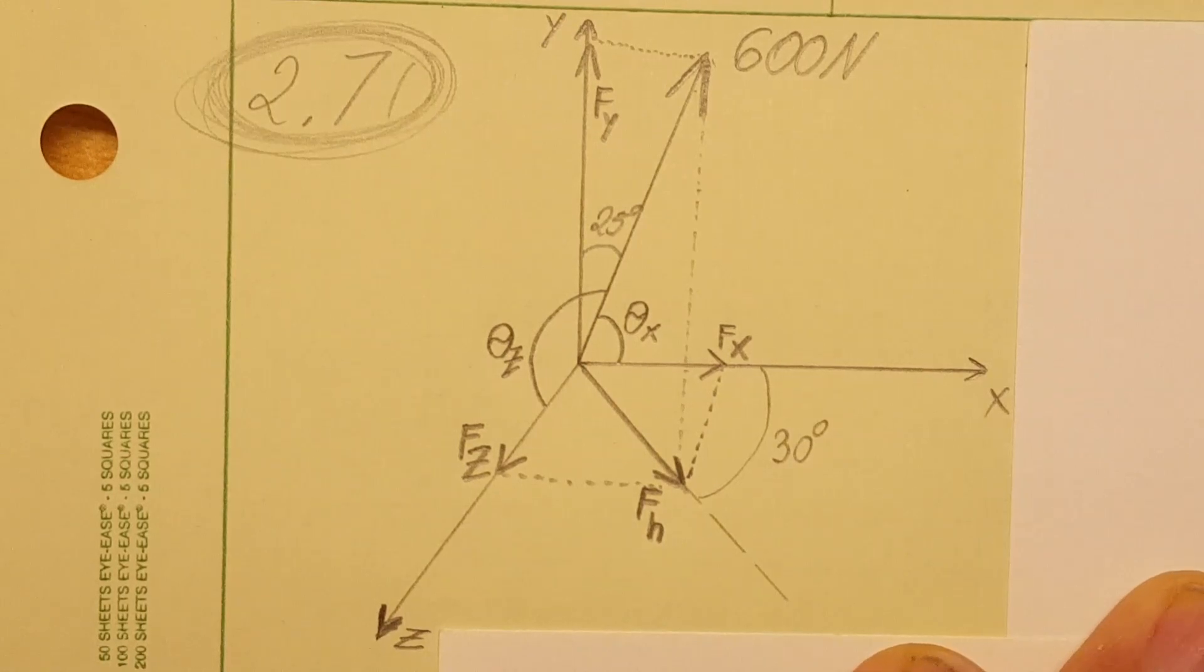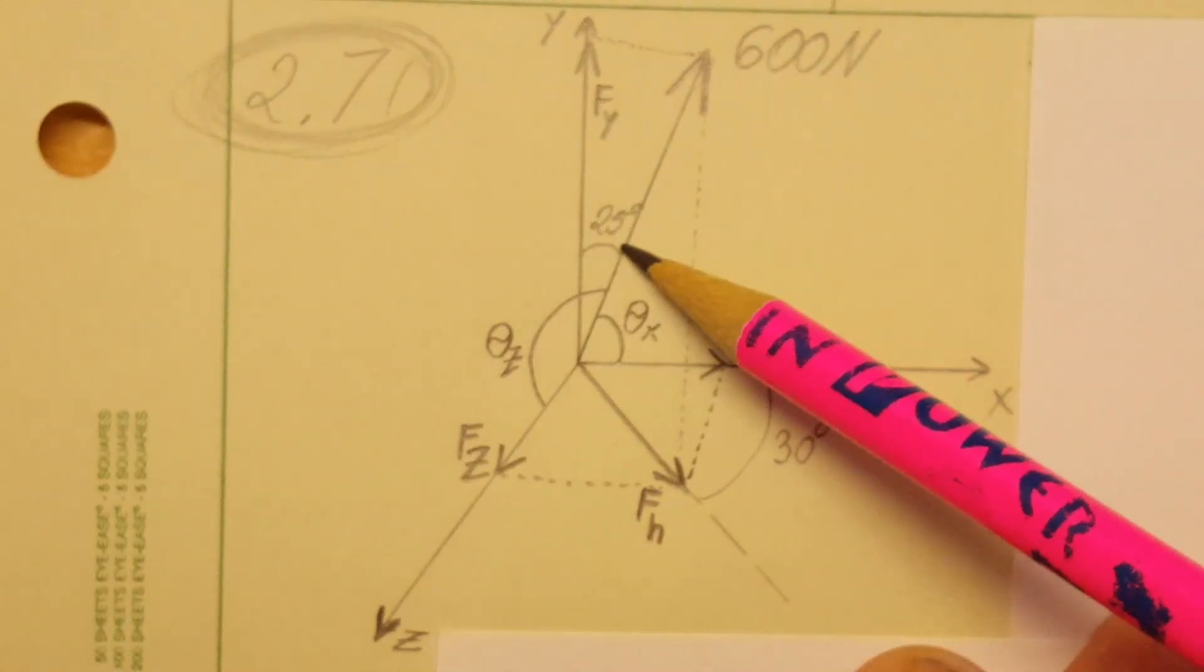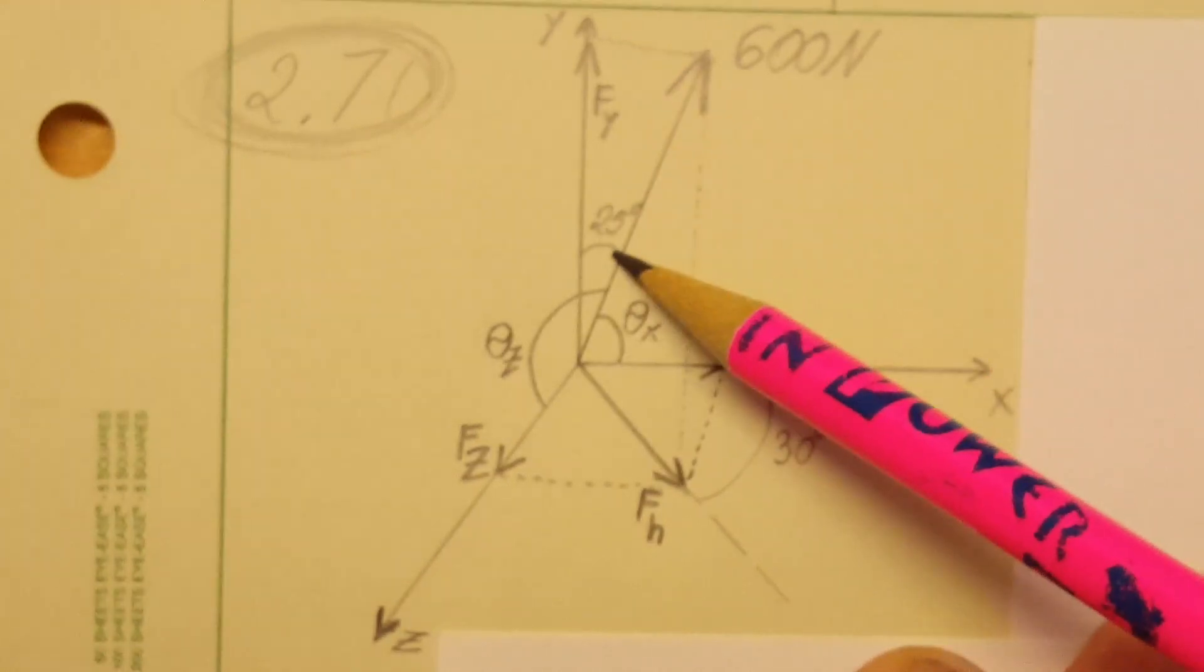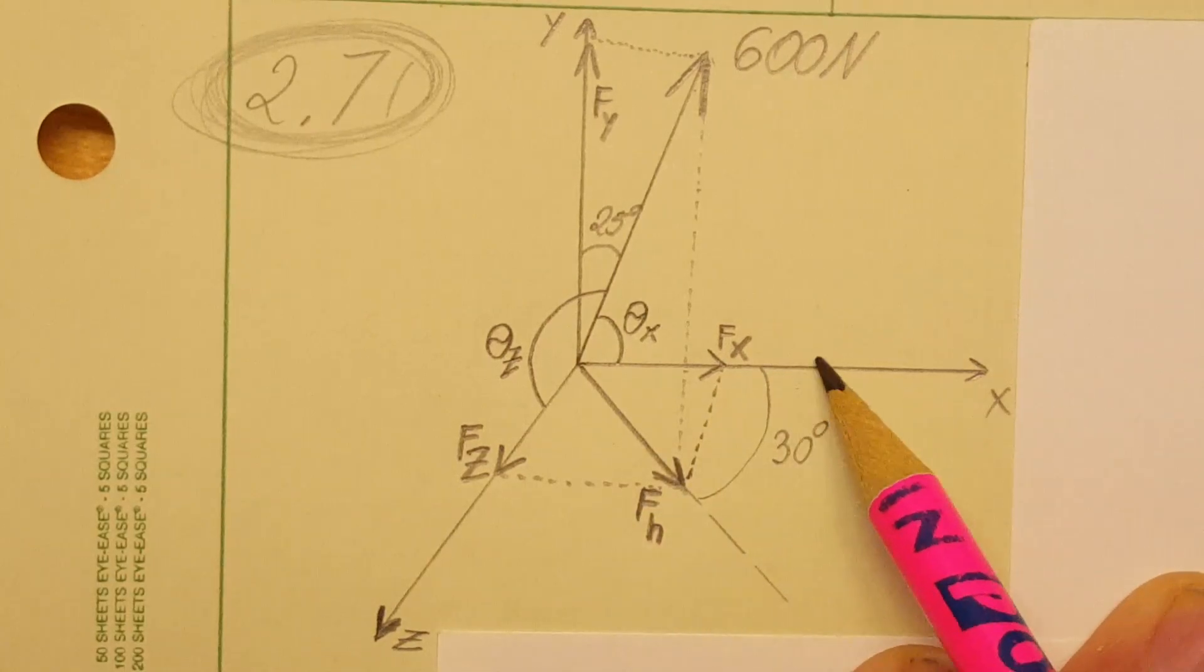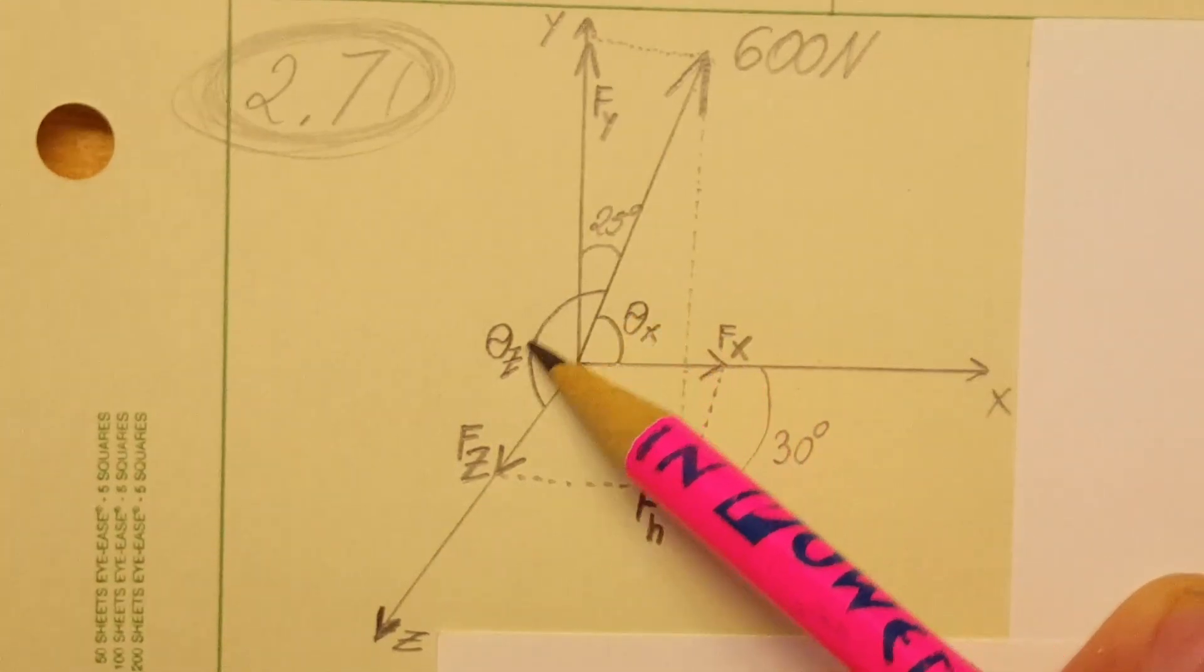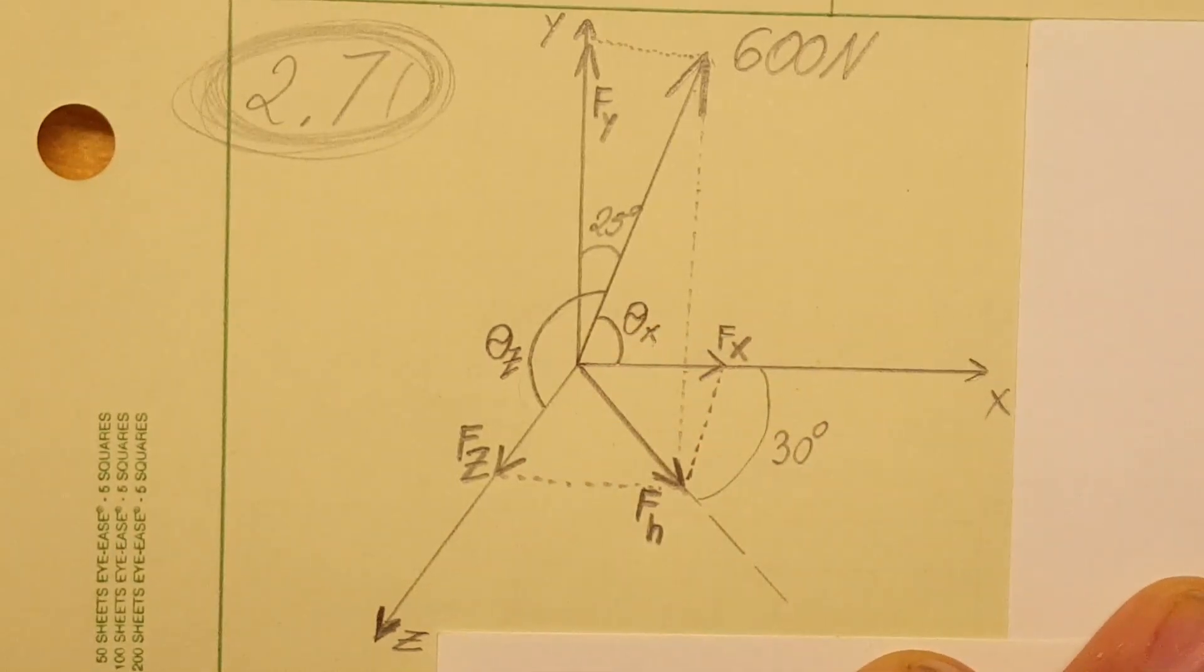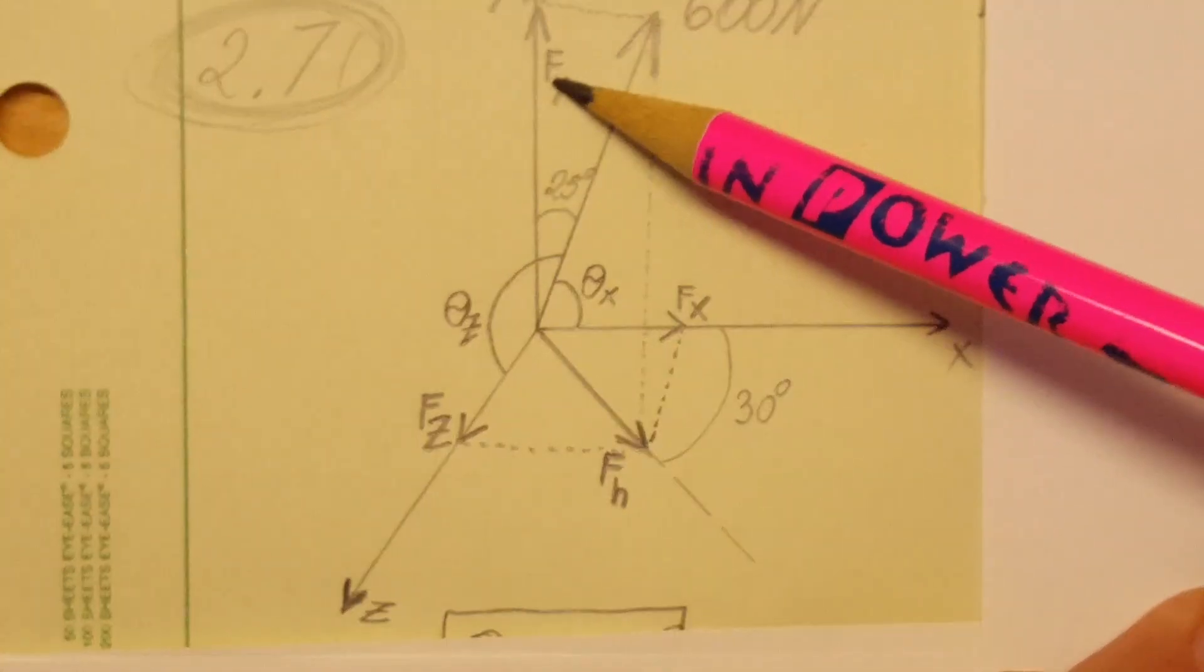The angles theta x, theta y, and theta z are what the force forms with the coordinate axes. So right here this will be with the y-axis, so it's going to be theta y coming down to x. Right here it's going to be theta x, and coming towards z is going to be theta z.